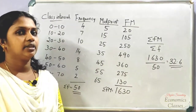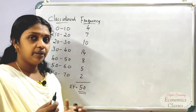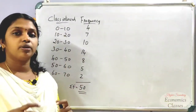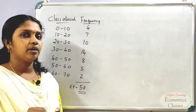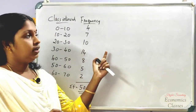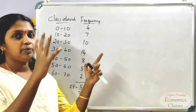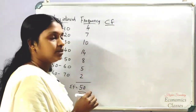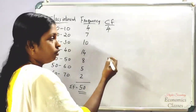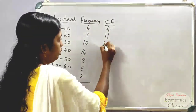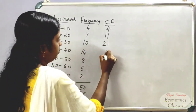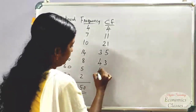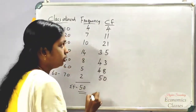Now we are going to calculate the median. We need the cumulative frequency column. The cumulative frequency values are: 4, 11, 21, 35, 43, 48, and 50.